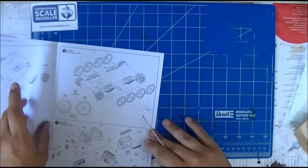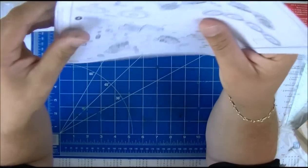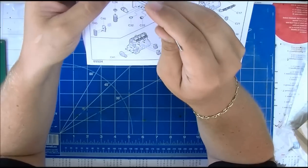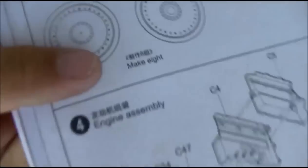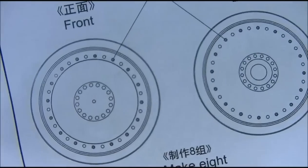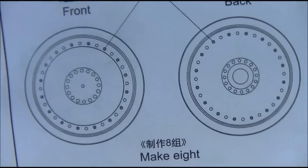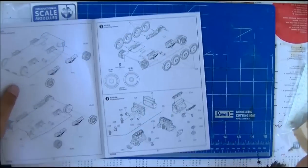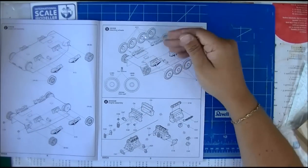They give you road wheels with a lot of rivets or bolts. And they want you, if you can take a look, to remove half of them. Every grayed out one you have to remove. That's probably to do with the version of the Control 38T this is.